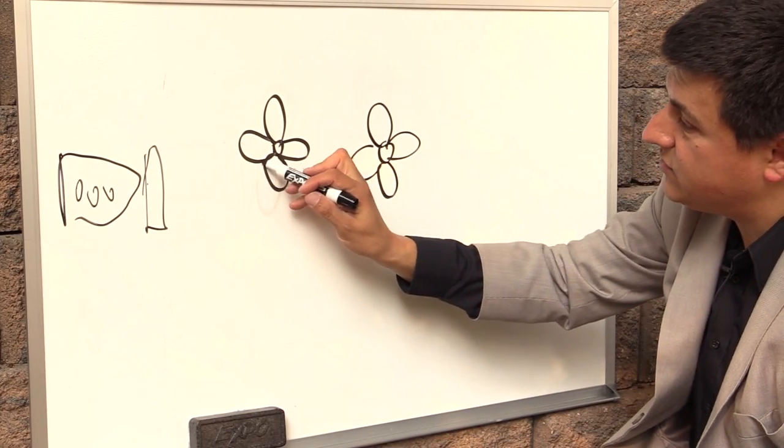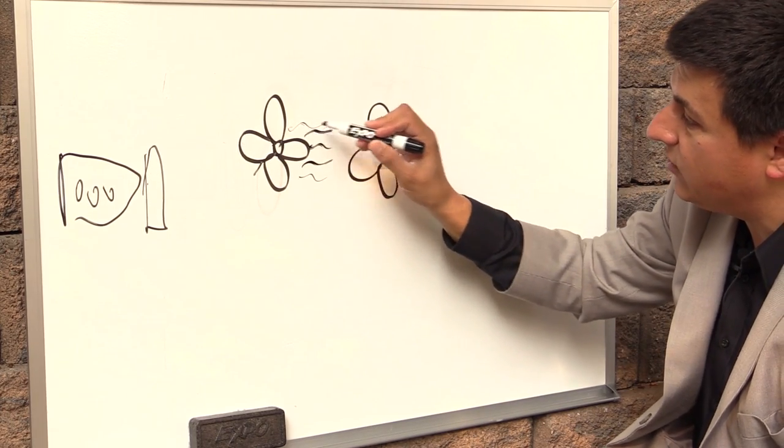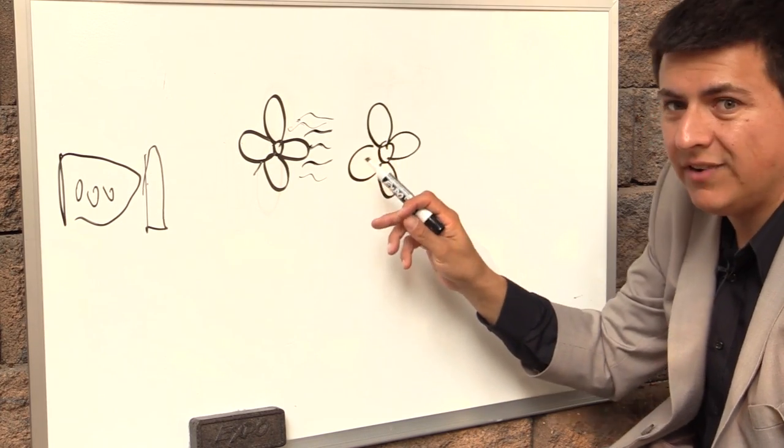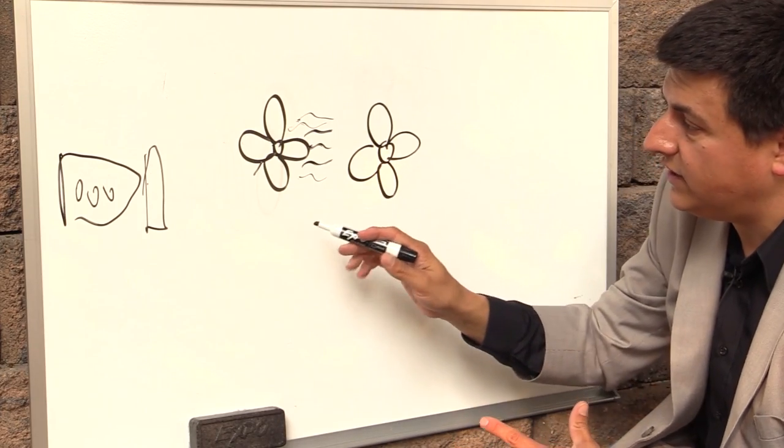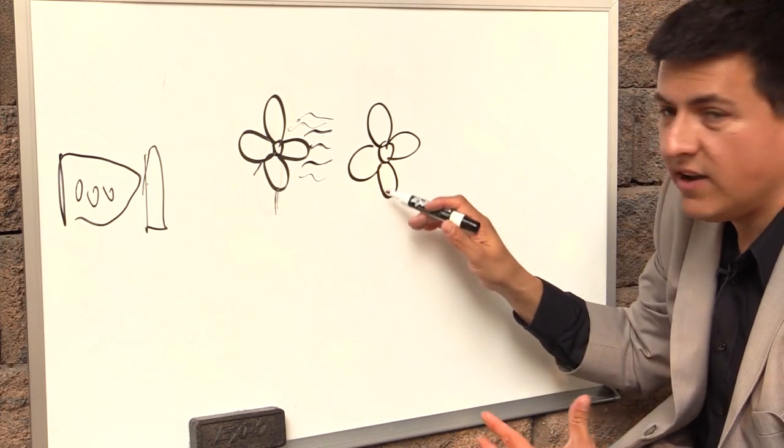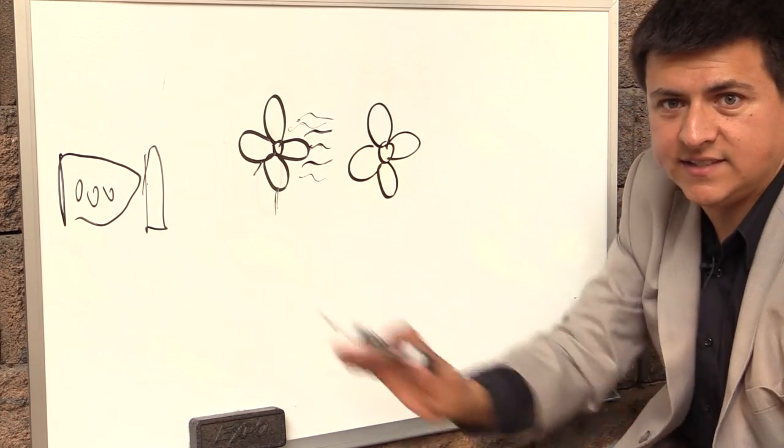This one is driven by the engine and it causes fluid to move over and then causes this other turbine to spin. You can think of this sort of like using a desk fan to drive a wind turbine to generate electricity. The same sort of thing is going on inside the torque converter.